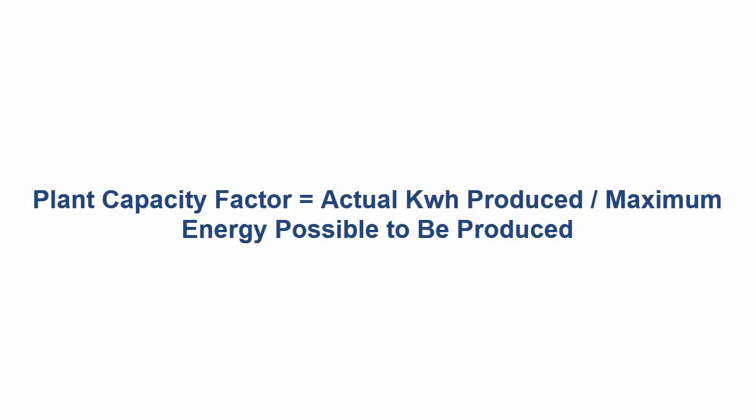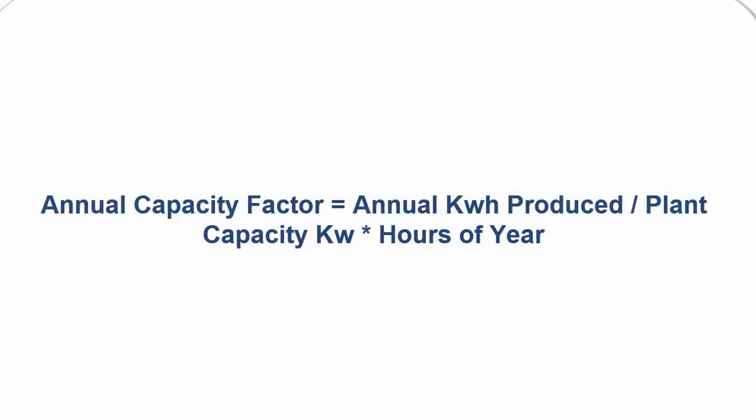The plant capacity factor is the ratio of actual kilowatt-hours produced to the maximum possible kilowatt-hours if the plant operated at full capacity. This is similar to the utility factor but expressed in kilowatt-hours, indicating how much energy was produced versus the maximum possible if all generators ran at full capacity. If this is calculated over one year, it is termed the annual capacity factor — the annual kilowatt-hours produced divided by the maximum plant capacity per year.